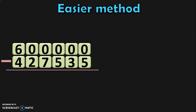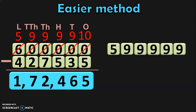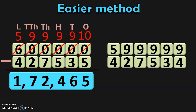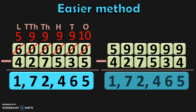Here, you have 6,00,000 minus 4,27,535. When you do the subtraction by the borrowing or the regrouping method, you get the answer 1,72,465. Let us see how to do this by the ECM method. Subtract 6,00,000 minus 1, which gives you 5,99,999. Subtract 4,27,535 minus 1, which gives you 4,27,534. When you subtract these two numbers: 9 minus 4 is 5, 9 minus 3 is 6, 9 minus 5 is 4, 9 minus 7 is 2, 9 minus 2 is 7, and 5 minus 4 is 1. You get the same answer, 1,72,465.